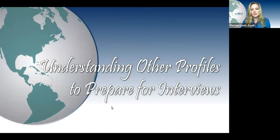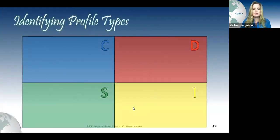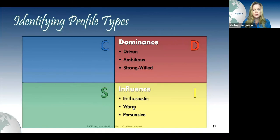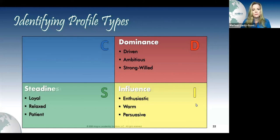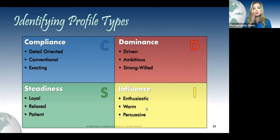I have just a few more minutes, so I'm going to breeze through this. Understanding other profiles to prepare for interviews: if there is a D, they're driven, ambitious, and self-willed. I's are about influence — enthusiastic, warm, persuasive. People with high S's are very loyal, relaxed, and patient — they are completely opposite of me. And then there's C: those folks are deep, very detail-oriented, conventional, exact, and literal — the ones who are going to hold you to whatever the rules are.